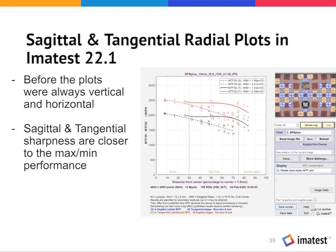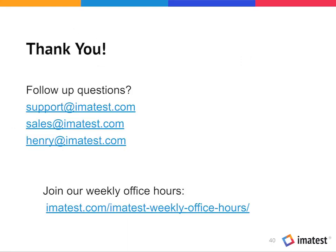Currently sagittal MTF only goes to about 70% of the field and tangential to about 85%. When we move to the slanted star target with specific modifications, we'll get sagittal and tangential MTFs closer to all four corners. If you're interested in joining our pilot program, you can go to imatest.com/pilot — that release will probably be out later this week. That is the end of this webinar presentation. I'm happy to take any questions. I hope it was a good use of your time. You can follow up by contacting our support or sales, or reach out to me individually. We also have weekly office hours at different times for the US/Europe and Asia regions.